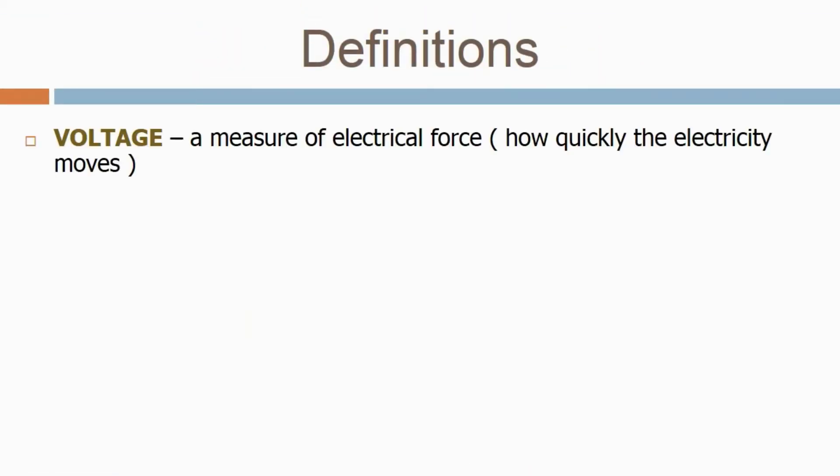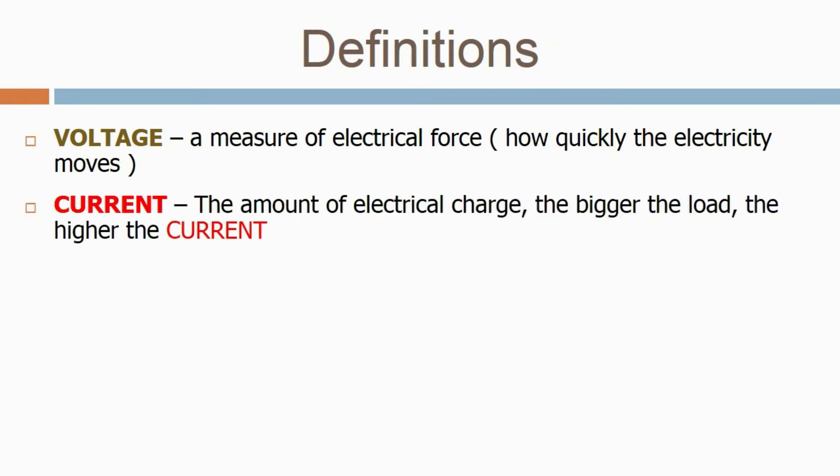Let's look at some of the definitions we'll be using in this course. The first one is voltage, that's a measure of electrical force, i.e. how quickly the electricity moves. Next is the current, that's the amount of electrical charge. The bigger the load, the higher the current.